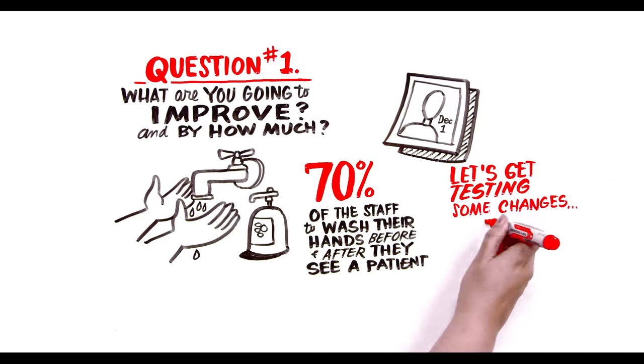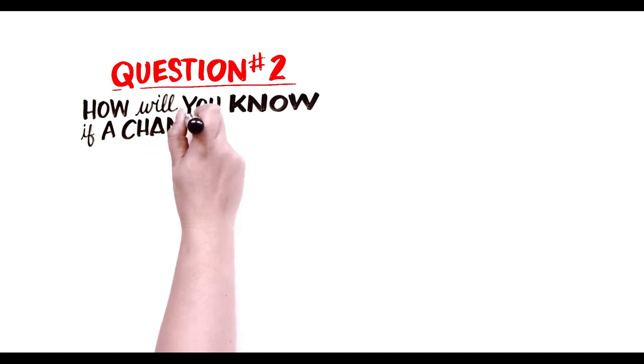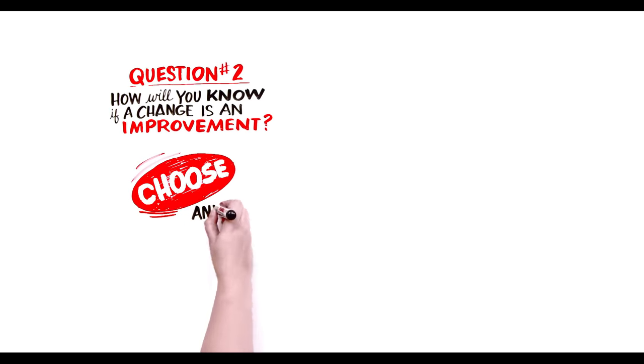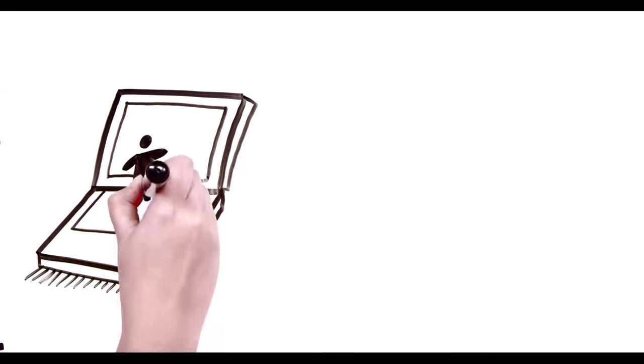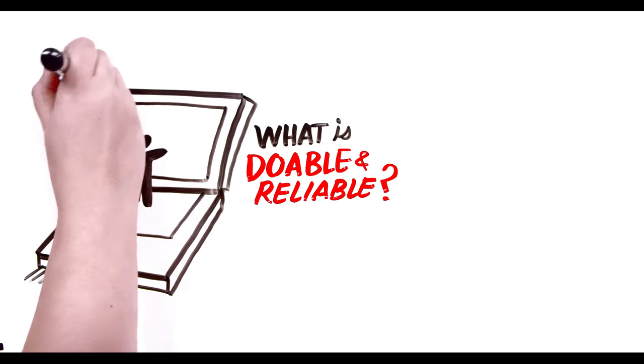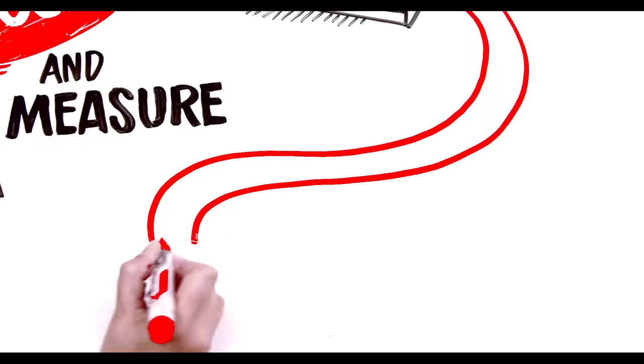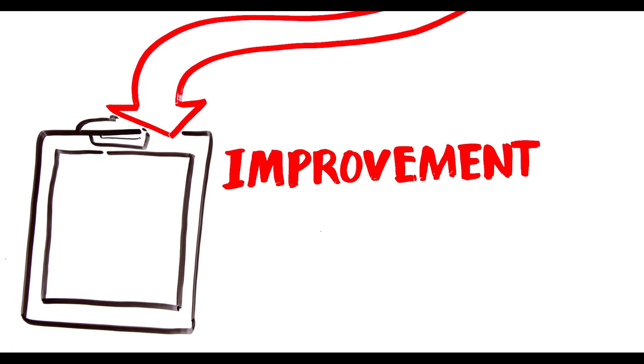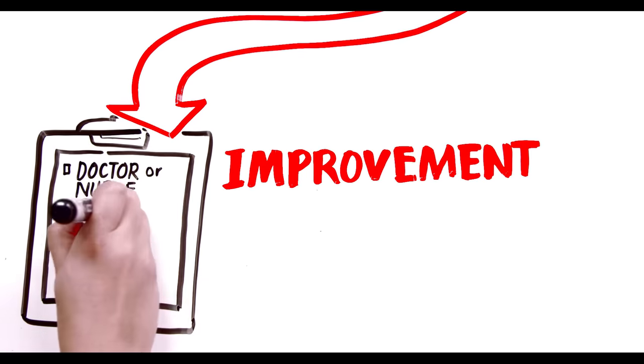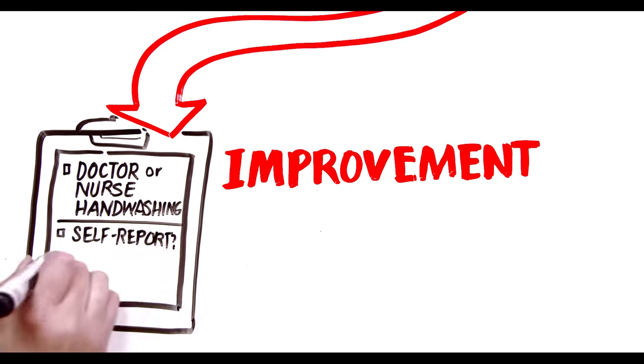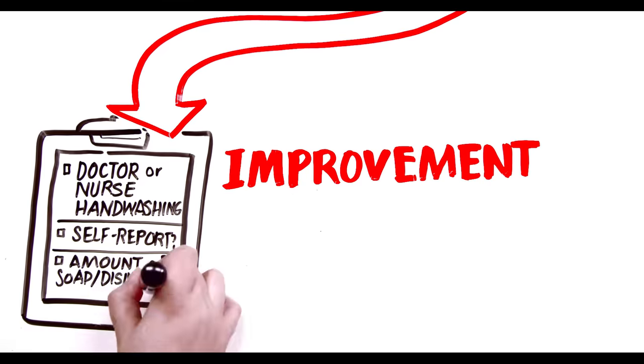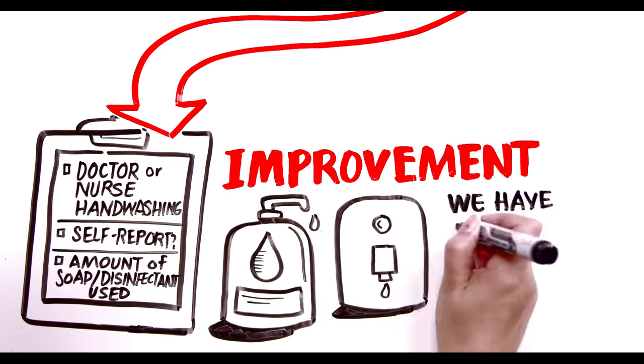So let's start testing some changes, okay? Not so fast. Now you need to ask question two: how will you know if a change is an improvement? We need to choose some things and measure them. What is doable and reliable that will tell us if the changes we are making are leading to an improvement? Is someone documenting doctor or nurse hand-washing? Is it self-report? Is it the amount of soap and disinfectant used? Okay, we have an aim and now we have some measures.